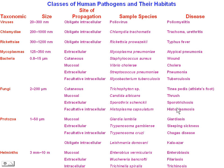You should know that tineas, thrush, sporotrichosis, and histoplasmosis are fungi. You should know giardia, sleeping sickness, Chagas disease, and kala-azar are protozoans. We'll mention these briefly. And if you hear a worm disease — whether it's a nematode or some other type of worm — like enterobiasis, filariasis, or trichinosis, you should know that these are helminths.